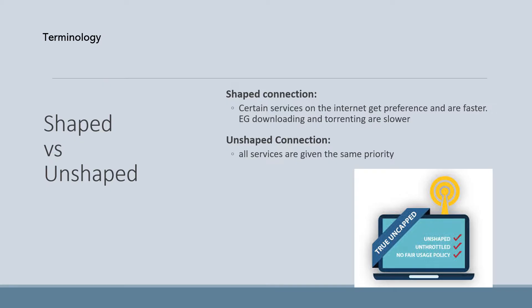Then there's shaped versus unshaped. A shaped connection is when your internet connection is managed by the internet service provider. Some services are given a preference and a faster download or upload speed. For example, when you're torrenting — basically downloading movies — that is shaped to go slower so that other things like sending emails or surfing the internet can go at a good fast speed. Unshaped is when all services are given the same priority, so nothing goes faster than anything else.